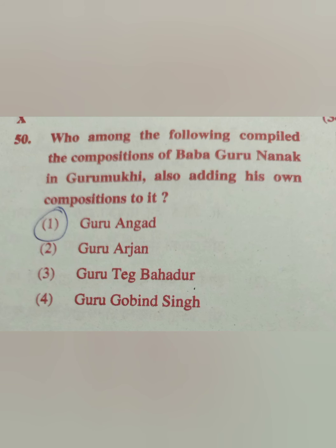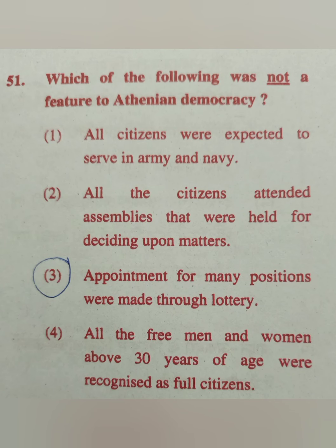Question 50: Who among the following compiled the compositions of Baba Guru Nanak in Gurmukhi, also adding his own compositions? Options: Guru Angad, Guru Arjan, Guru Teg Bahadur, Guru Govind Singh. The correct answer is Guru Angad.